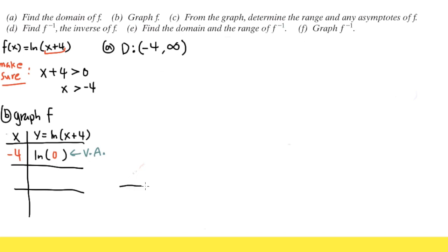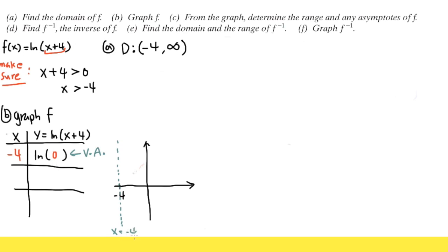Let me show you. Here is the x-axis and the y-axis. When x is negative 4, we indicate the vertical asymptote with a vertical dashed line right here. This dashed line represents x equals negative 4. So you should look for when ln gives you 1 — in this case x equals negative 4 gives the vertical asymptote.